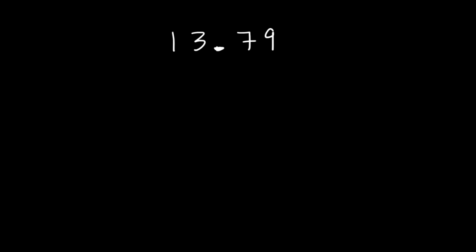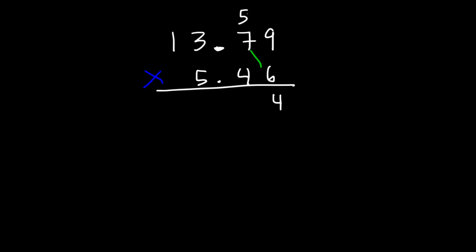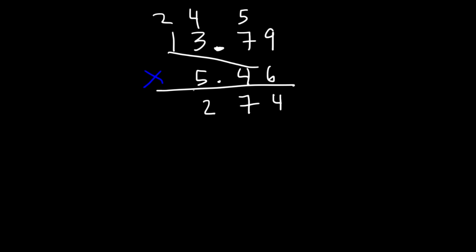Now let's move on to some harder examples. Let's multiply 13.79 by 5.46. Let's begin by multiplying 9 and 6. 9 times 6 is 54 — carry over the 5. Next, we have 7 times 6, which is 42 plus 5, so that's 47 — carry over the 4. And next, we have 3 times 6, which is 18 plus 4, so that's 22. 6 times 1 is 6 plus 2, that's 8.